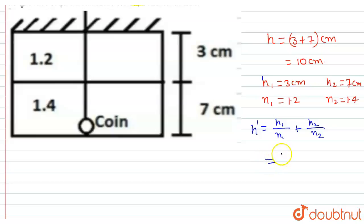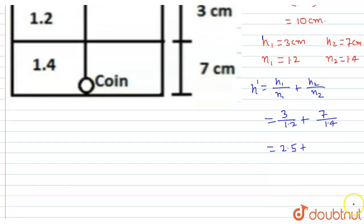Now substituting, h1 is 3 and n1 is 1.2, plus 7 divided by 1.4. Solving this, we get 2.5 plus 5.